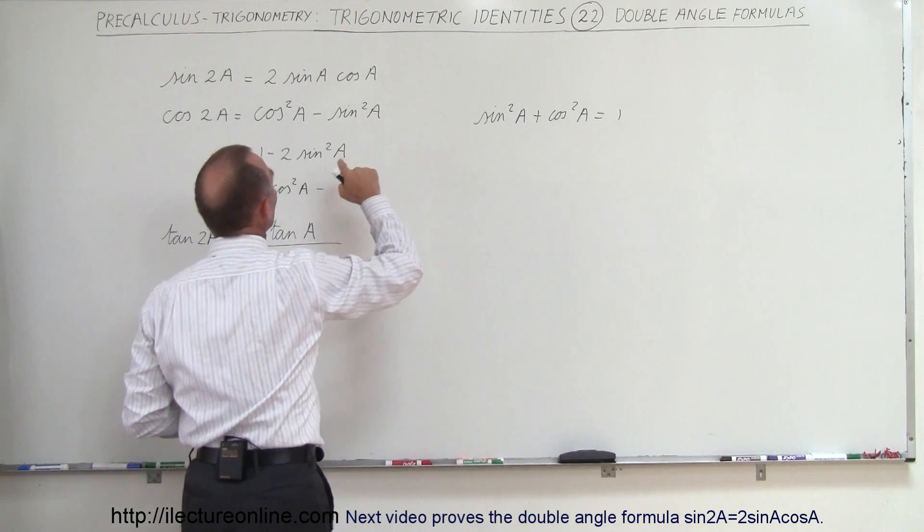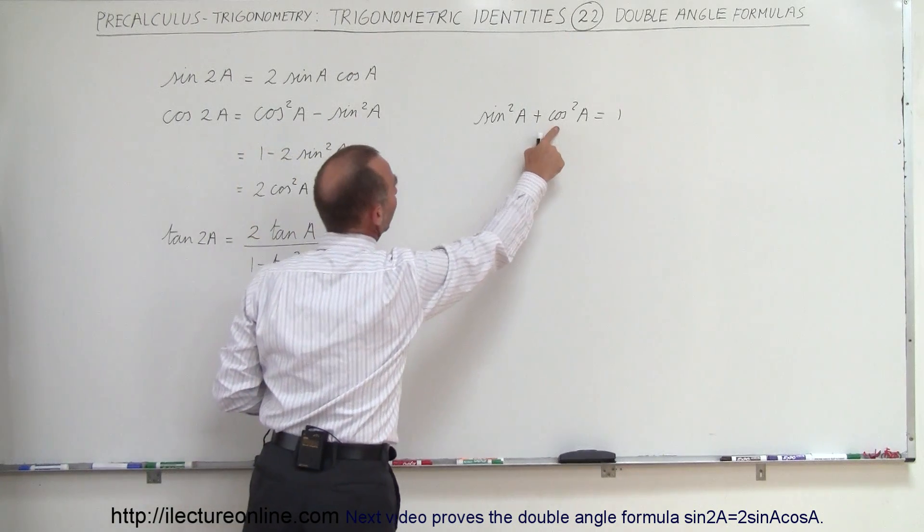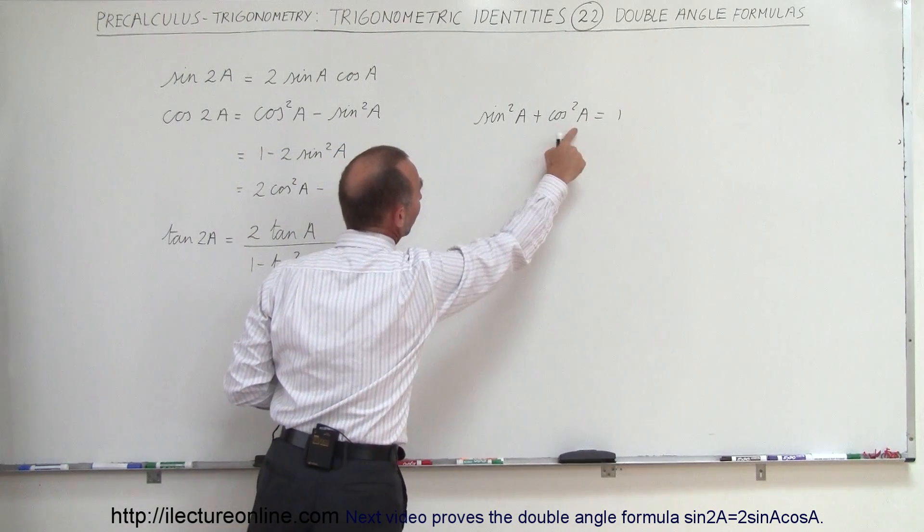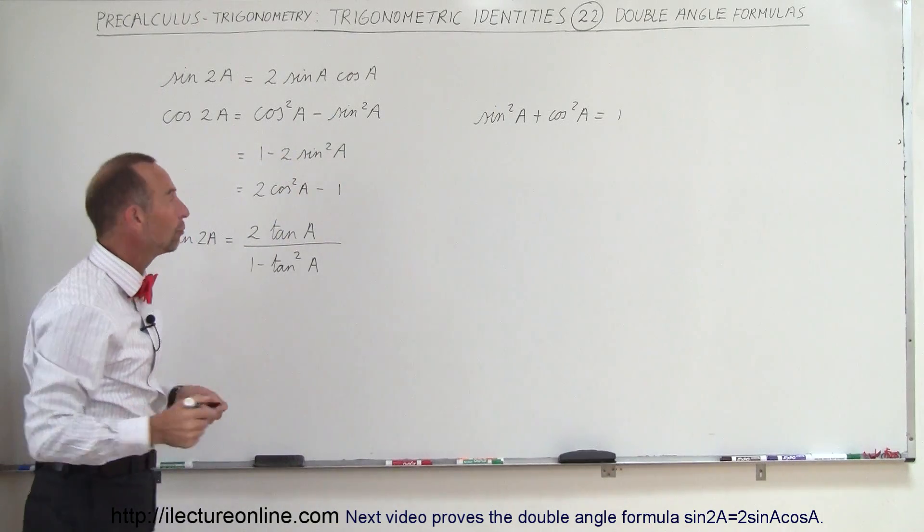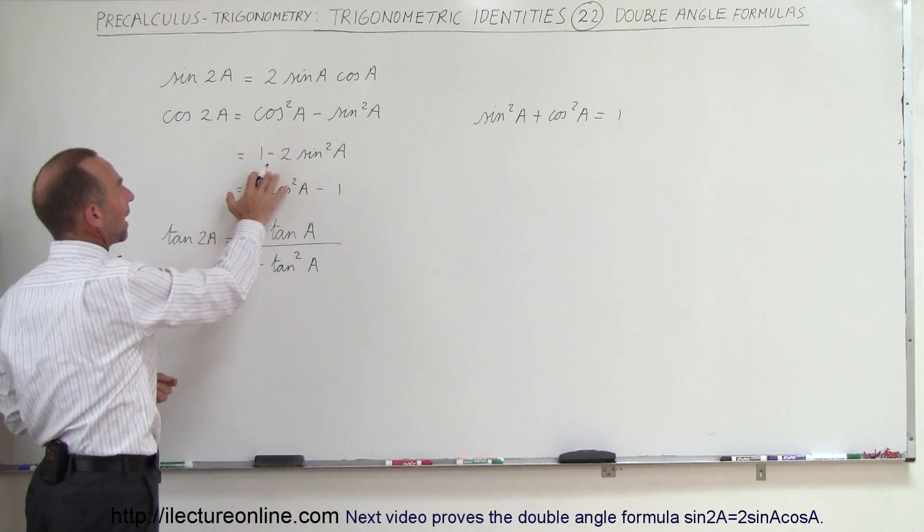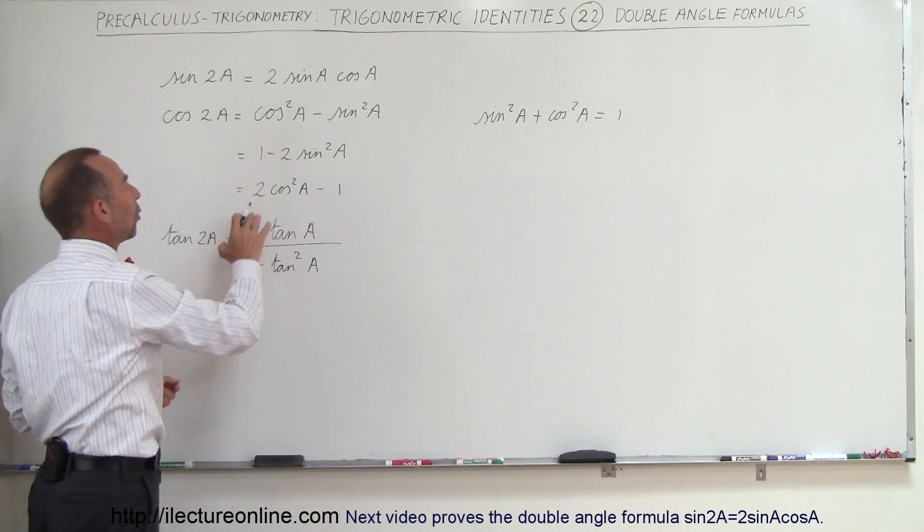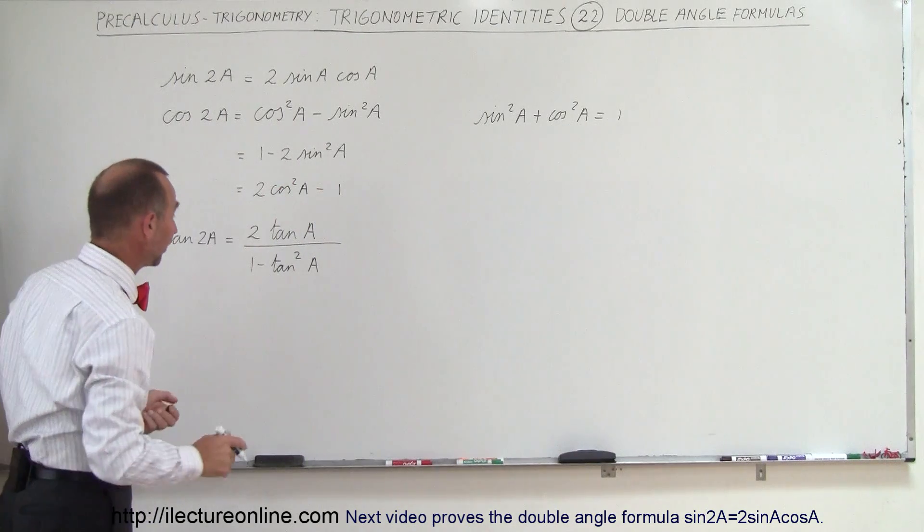We could replace one of these. For example, sine squared of A by 1 minus cosine squared of A, and substitute. You end up with these other two forms of the same equation. So cosine of 2A can also be written as 1 minus 2 sine squared of A, or 2 cosine squared of A minus 1, simply by using that identity.